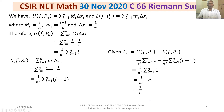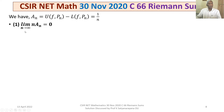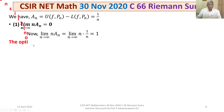We are now ready to discuss the options. We have An = 1/n. For Option 1: the limit as n tends to infinity of n·An = limit of n·(1/n) = 1, which is not equal to 0. Hence Option 1 is not true.